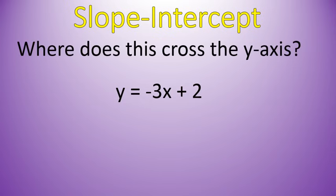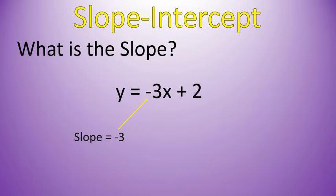Next question, where does this line cross the y-axis? That's this, 2. It crosses the y-axis at the point 0, 2. So that is my y-intercept, and that is my slope.